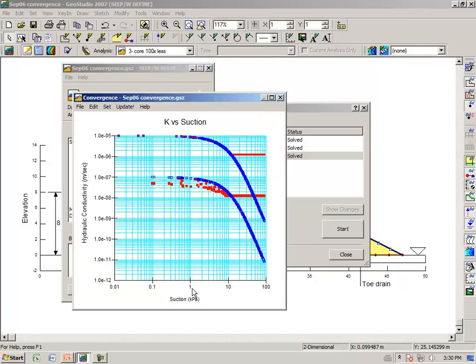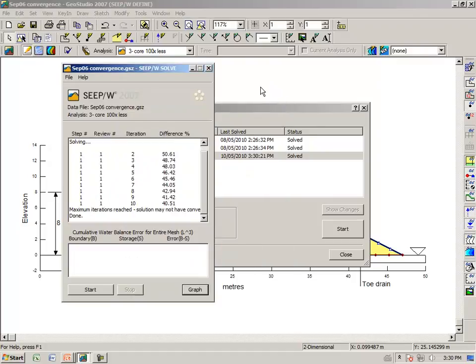By default, we give you a graph of the hydraulic conductivity versus suction. And when you see red dots that do not fall on the function, that is a signal that we have not reached a converged solution. So this is one way to do it, is to look at the graph in the solve window. A little later, I will show you another way to look at the graph.